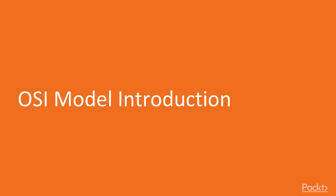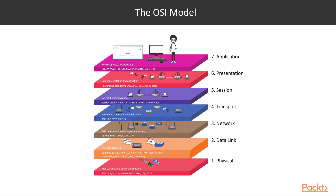In this video, we will introduce the OSI model. The OSI model, or the Open Systems Interconnection model, is a conceptual model that standardizes the communication functions of telecommunication between computing systems without regard to its underlying internal structure and technology. The main goal is interoperability of diverse communication systems with standard protocols. As you can see here on the screen, the OSI model breaks down the data transfer and communication between computers into a procedure of different components called layers.